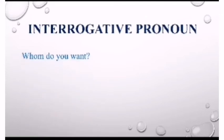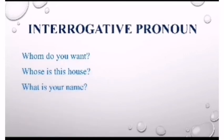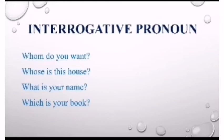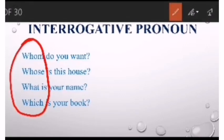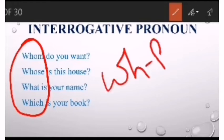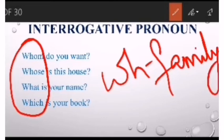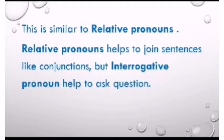The last kind of pronoun is interrogative pronoun. Again, just check the examples: 'Whom do you want?', 'Who is this?', 'What is your name?', 'Which is your book?' You might be confused — we just learned these same words as relative pronouns. You are right, they are the same WH family words. But the difference is: relative pronouns help to join sentences like conjunctions, whereas interrogative pronouns are used to ask questions. That is the difference.